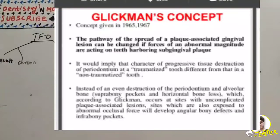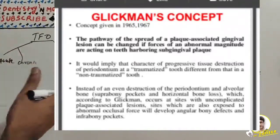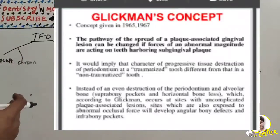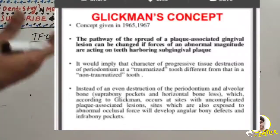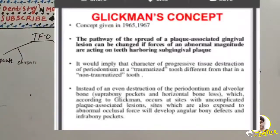According to Glickman, sites with uncomplicated plaque-associated lesions develop suprabony pockets and horizontal bone loss, whereas sites also exposed to abnormal occlusal forces will develop angular bony defects and infrabony pockets. Normally without these forces, there would be horizontal bone loss with suprabony pockets, but the presence of abnormal occlusal force with plaque-associated lesion results in angular bony defects and infrabony pockets.